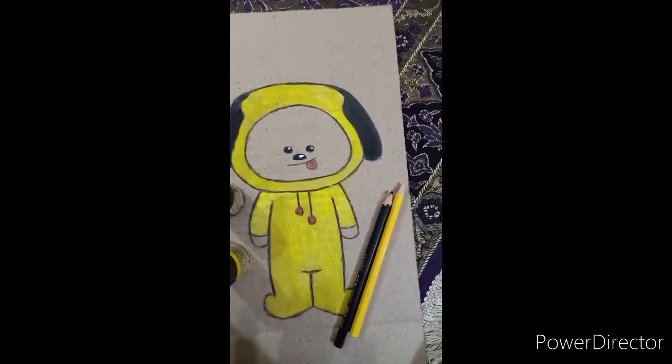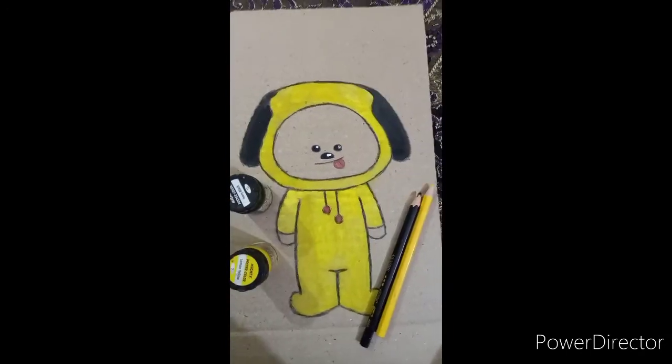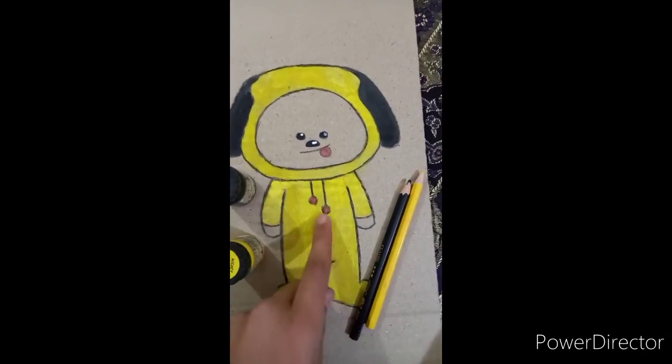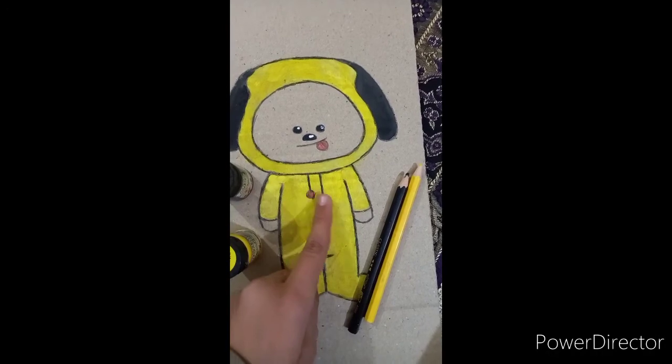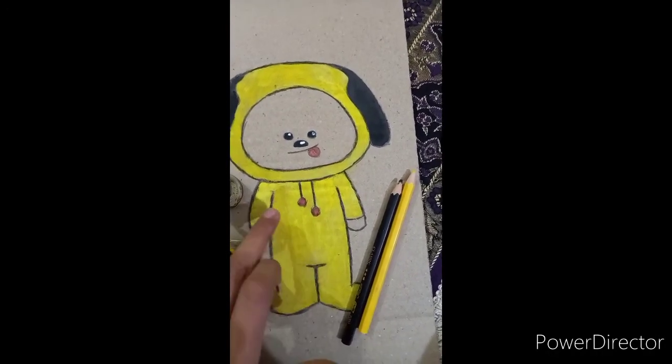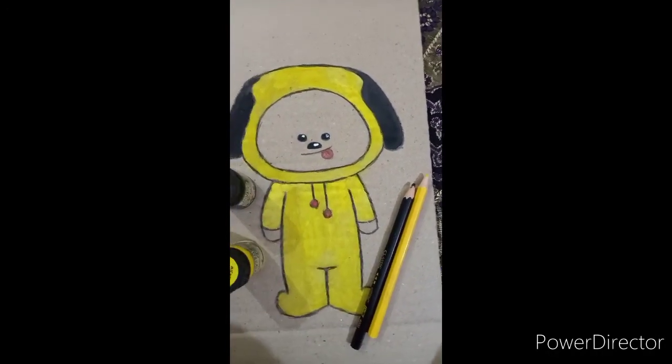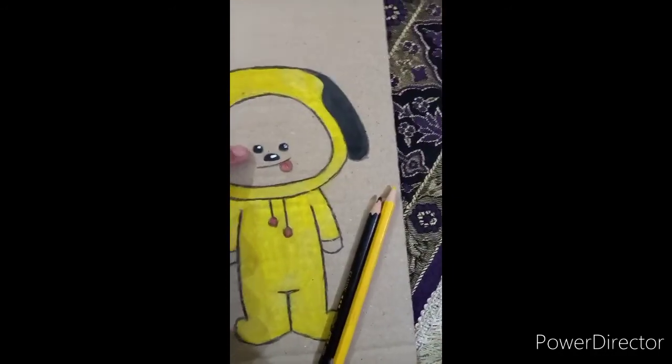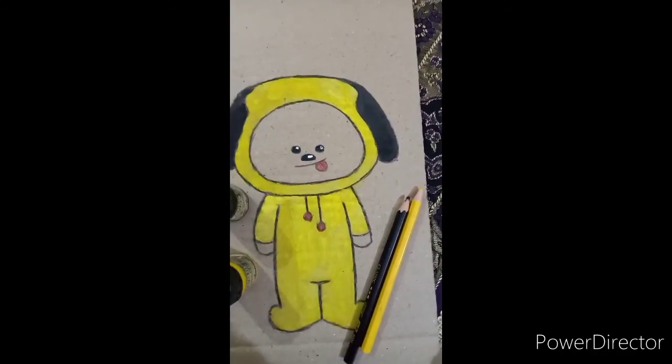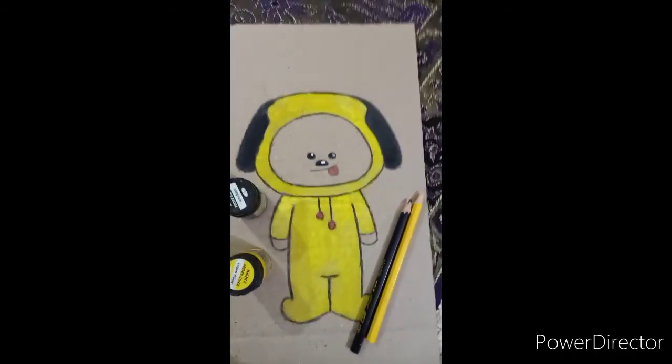So this outfit I used yellow, and for his cap also I used yellow. For his ears, black. And for his these cute little, I don't know, well, red. I used red for this and his eyes, black, nose also. So this is our cute little Chimmy.